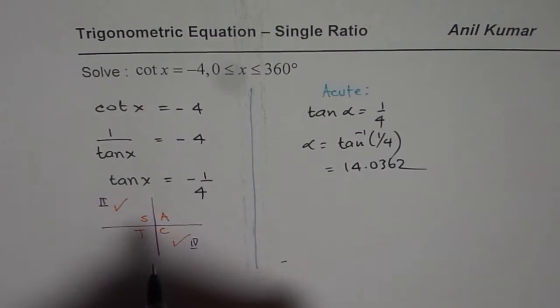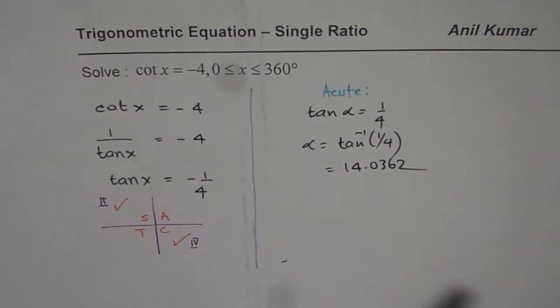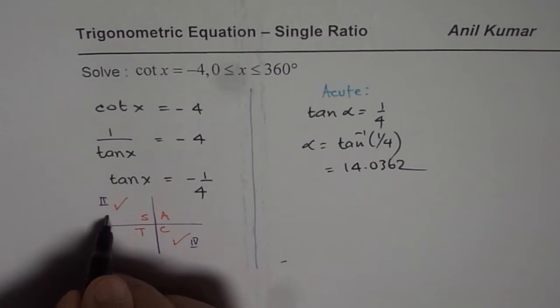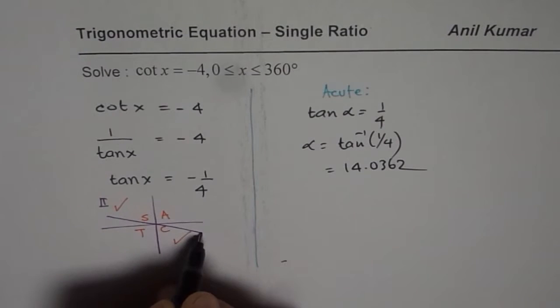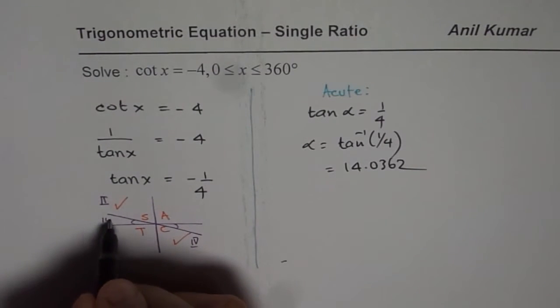It really means that acute angle is this much, 14 point. So kind of small angle here. So this acute angle is 14.036.